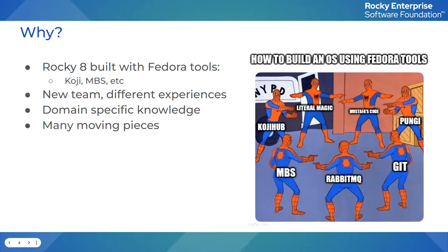With a lot of help from people like Pablo Greco and the Fedora SOPs — those pages are a wealth of information — we figured out how to build Rocky 8 with Koji, MBS, and all of the Fedora toolchain. It took us a good amount of time but we figured it out. To ease some of the pain of domain-specific knowledge required to run those tools, particularly with MBS and launching builds, we developed a thing called DistroBuild.